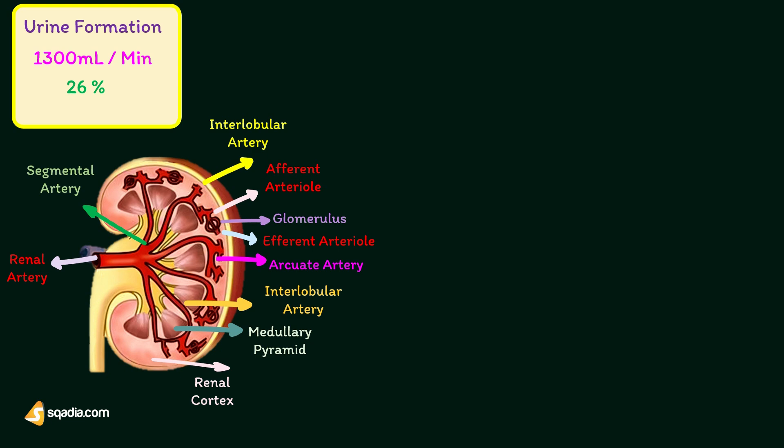Efferent arterioles form a second capillary network called peritubular capillaries, which surround the tubular portions of the nephrons. Thus, the renal circulation forms a portal system by the presence of two sets of capillaries: glomerular capillaries and peritubular capillaries.